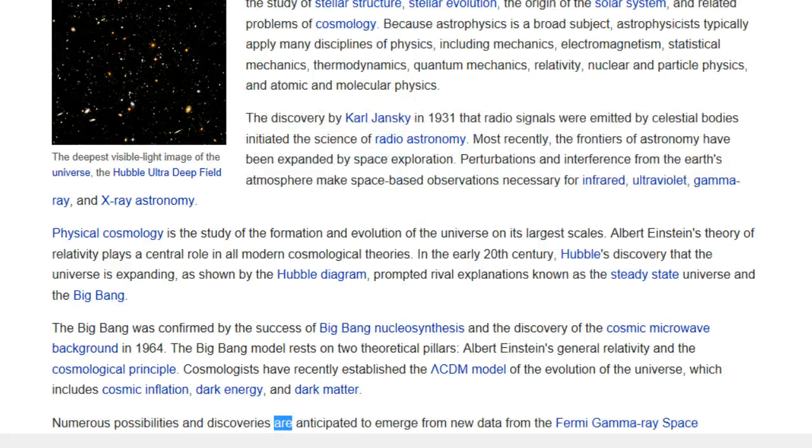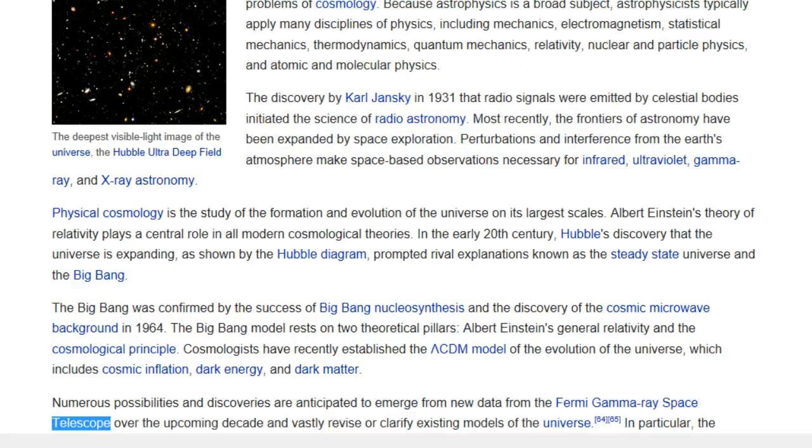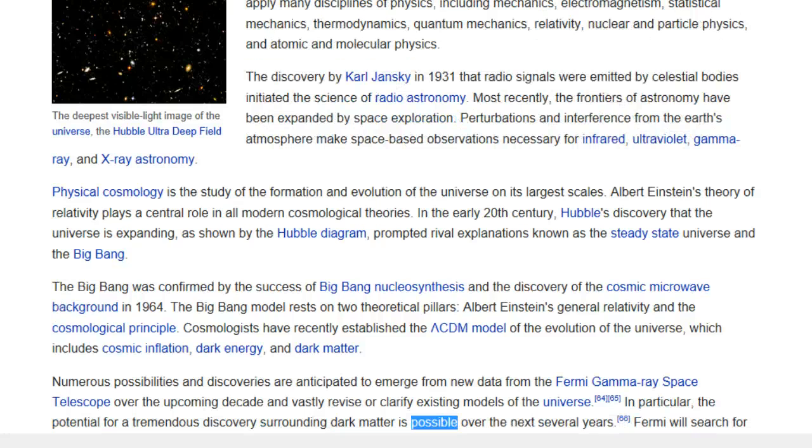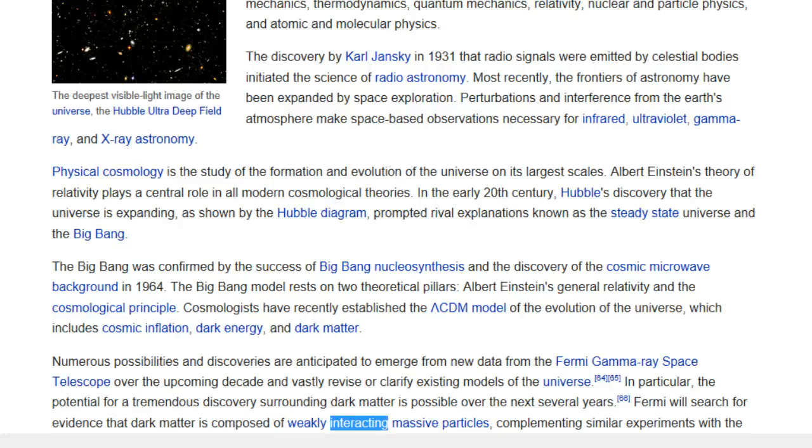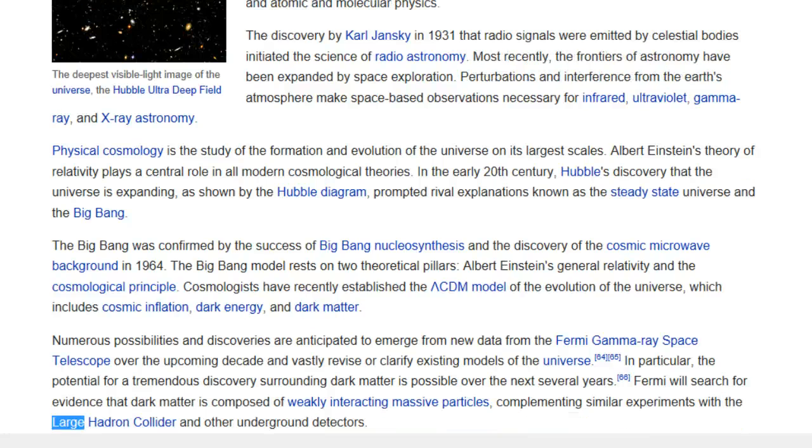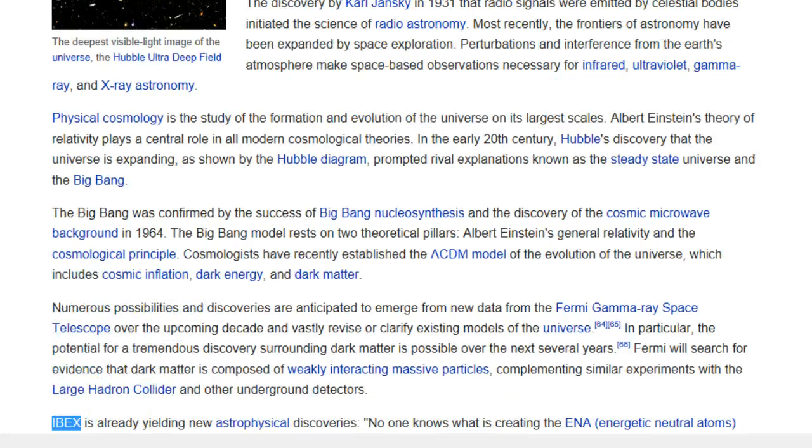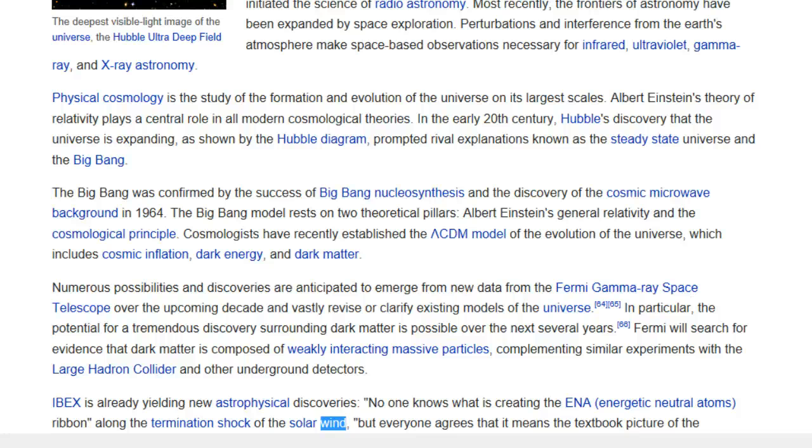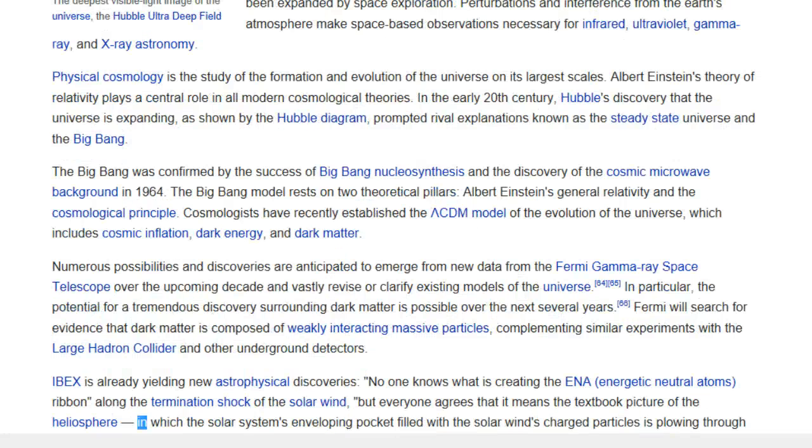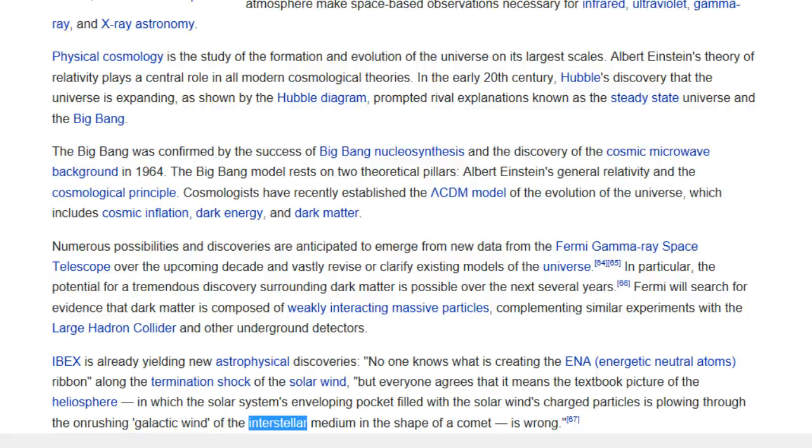Numerous possibilities and discoveries are anticipated to emerge from new data from the Fermi Gamma-ray Space Telescope over the upcoming decade and vastly revise or clarify existing models of the universe. In particular, the potential for a tremendous discovery surrounding dark matter is possible over the next several years. Fermi will search for evidence that dark matter is composed of weakly interacting massive particles, complementing similar experiments with the Large Hadron Collider and other underground detectors. IBEX is already yielding new astrophysical discoveries. No one knows what is creating the ENA ribbon along the termination shock of the solar wind, but everyone agrees that it means the textbook picture of the heliosphere, in which the solar system's enveloping pocket filled with the solar wind's charged particles is plowing through the onrushing galactic wind of the interstellar medium in the shape of a comet, is wrong.